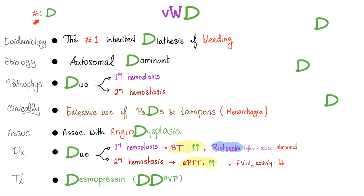Von Willebrand disease is the most common inherited disease of bleeding. The etiology is autosomal dominant. Pathophysiology: we have a dual defect — both a primary hemostasis defect and a secondary hemostasis defect.